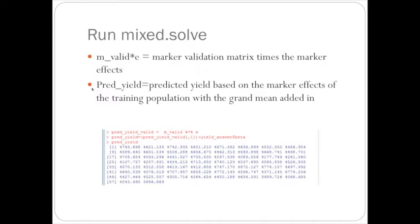You multiply the mvalid, which is the marker validation matrix, times the marker effects.